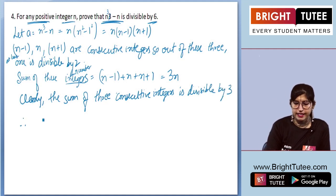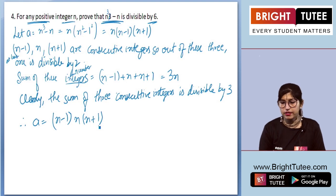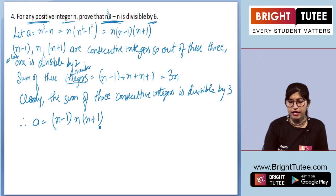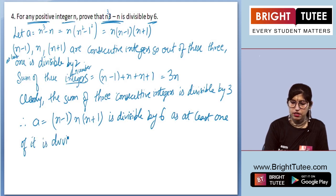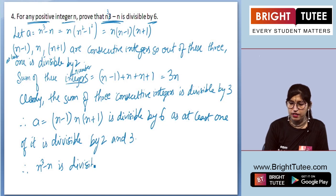Now we can say a = (n - 1) × n × (n + 1). We know that the sum is divisible by 3 and it is also divisible by 2. Since it is divisible by 2 and 3, we can say that this product a is divisible by 6. So for any positive integer n, n³ - n is divisible by 6.